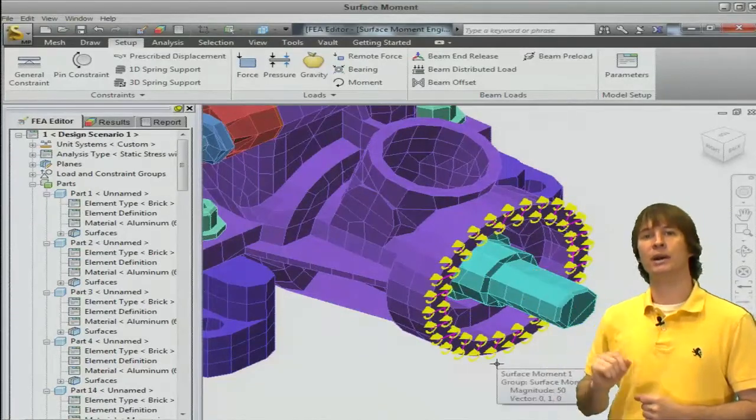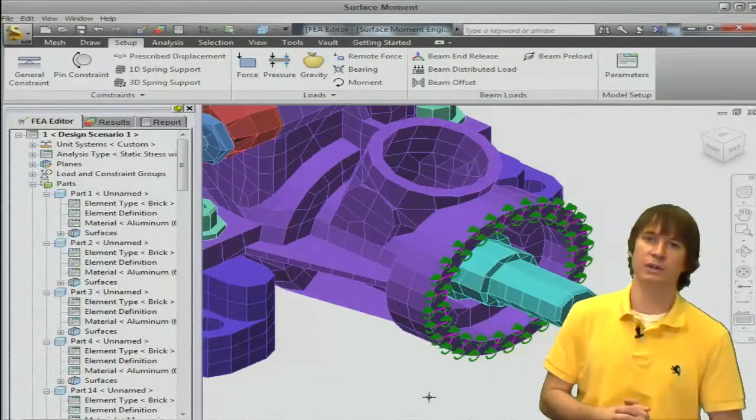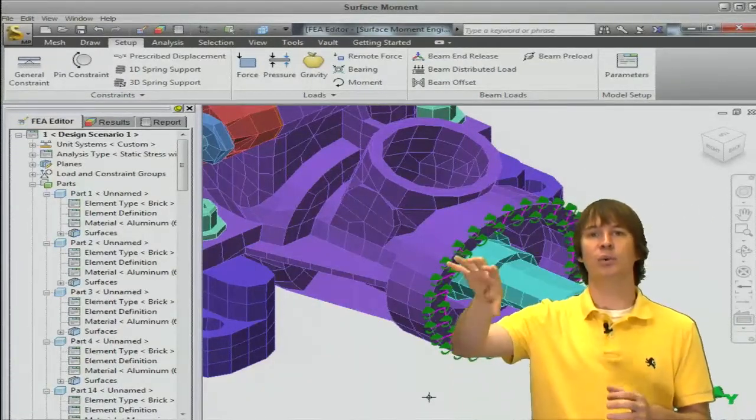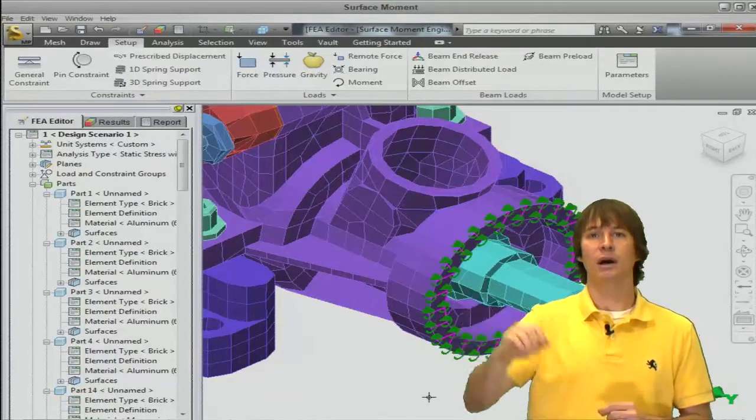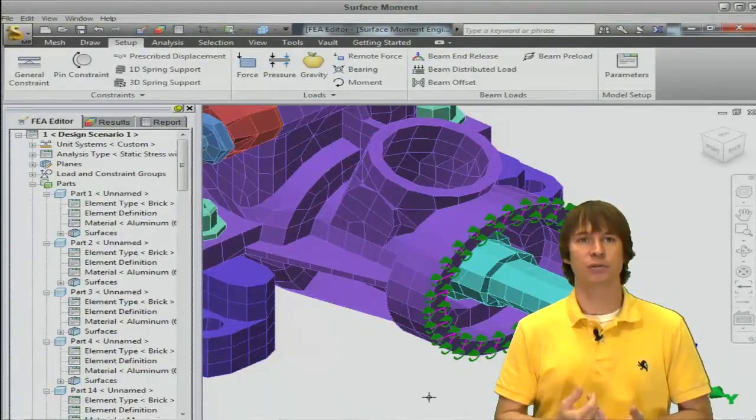We could define this on several surfaces if we so desired. Now what is going to happen is, if we analyze this, you would see that we would be bending around that little part that we have defined, and you could see the stress resulting from that.